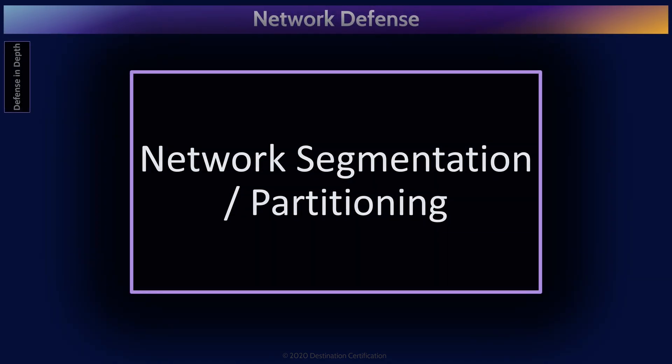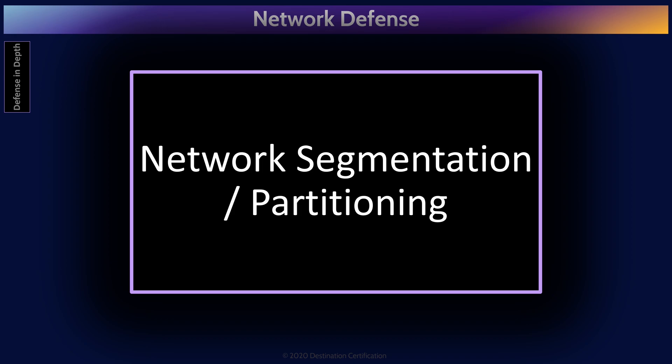Network segmentation, also referred to as partitioning, is the idea that we break our networks into pieces — segments or partitions — and then we control the flow of traffic between these segments. We can create different segments and apply differing levels of controls. One segment could be a guest network with very little controls, while another could contain high value backend databases with extensive controls to prevent and detect unauthorized access.